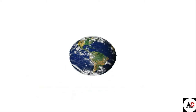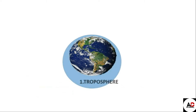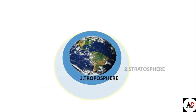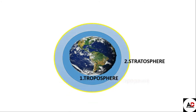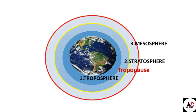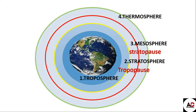Let's review the atmospheric layers again. The first layer is the troposphere and the second is the stratosphere; the boundary between them is the tropopause. The third layer is the mesosphere, and the boundary between the stratosphere and mesosphere is the stratopause. The fourth and last layer is the thermosphere, and the boundary between the mesosphere and thermosphere is the mesopause.